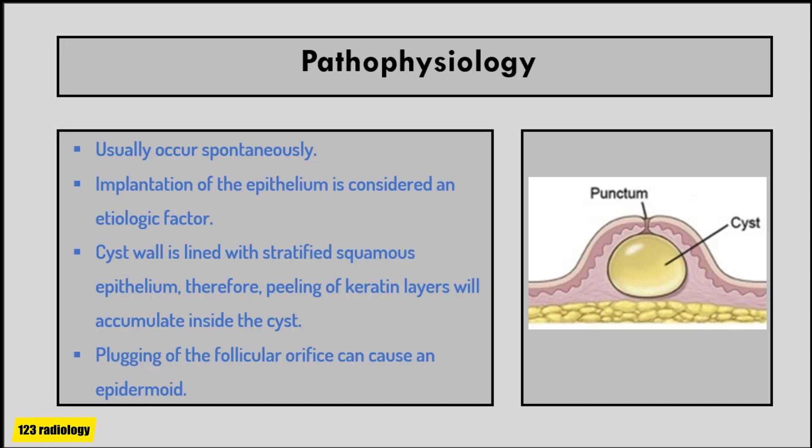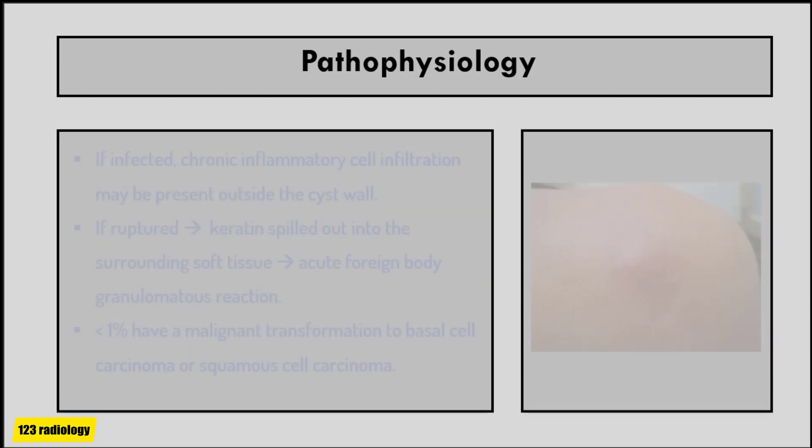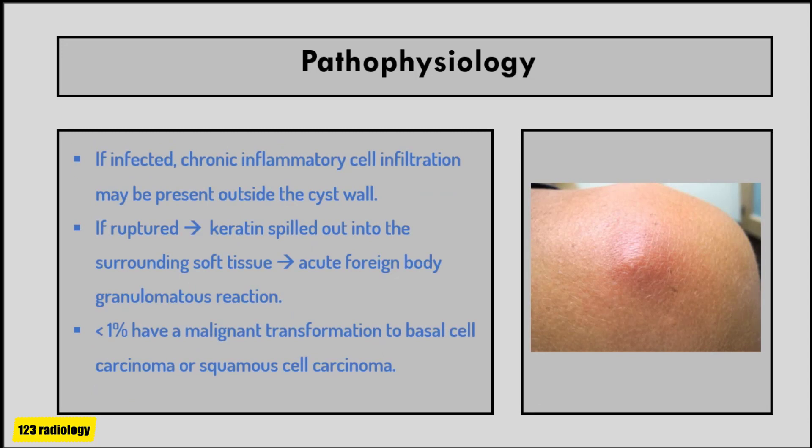The cyst is encapsulated with fibrous tissue and lined by a thin layer of squamous cells. If the cyst has been infected, chronic inflammatory cell infiltration may be present outside the cyst wall. If the lining is ruptured and keratin spills into the surrounding soft tissue, an acute foreign body granulomatous reaction will develop. Approximately less than one percent of epidermal inclusion cysts have malignant transformation to basal cell carcinoma or squamous cell carcinoma.